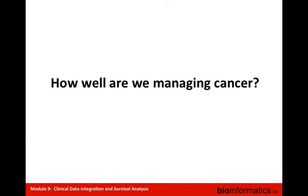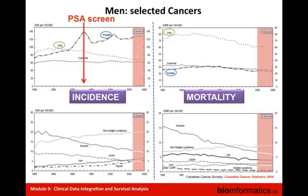There is a huge number of studies devoted to the detection and development of biomarkers for cancer — thousands and thousands of publications in PubMed. But it's good to ask ourselves: do we really manage cancer well, and how is this knowledge affecting the efficacy of managing cancer? These statistics are from the Canadian Cancer Society website — very useful statistics for anyone working in cancer research.